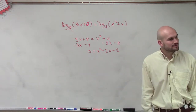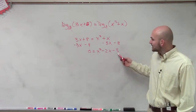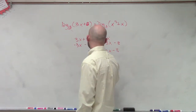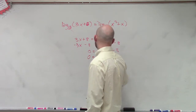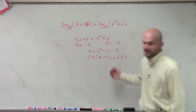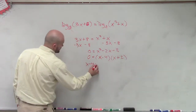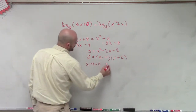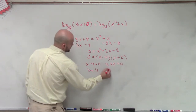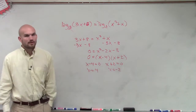Factoring is always the easiest and the quickest, usually. So we see what two numbers multiply to give us negative 8 and add to give us negative 2. So 0 equals x minus 4 times x plus 2. Then we apply the zero product property: x minus 4 equals 0 or x plus 2 equals 0. Solving for x: x equals 4, x equals negative 2.